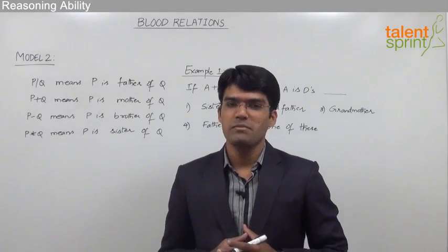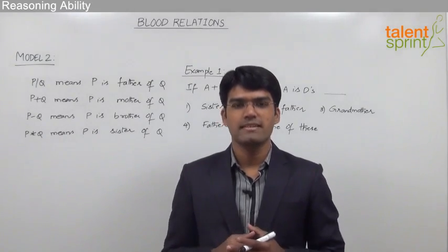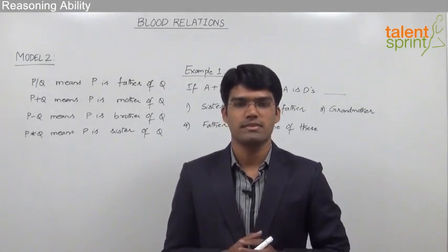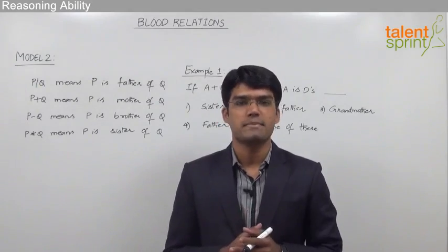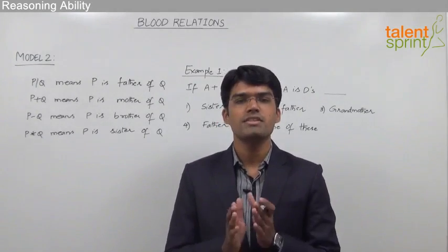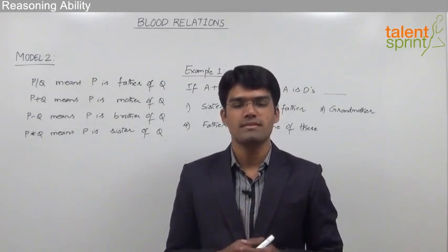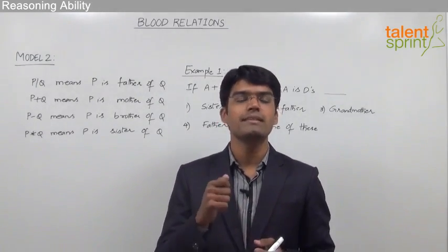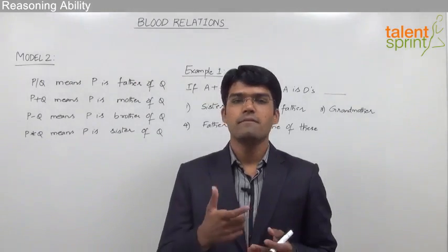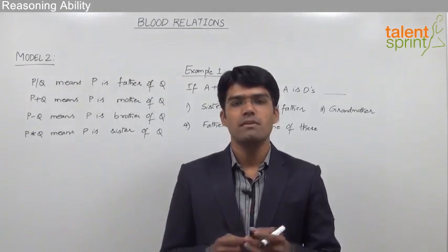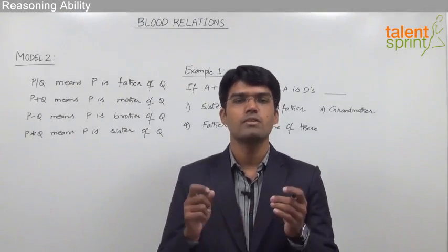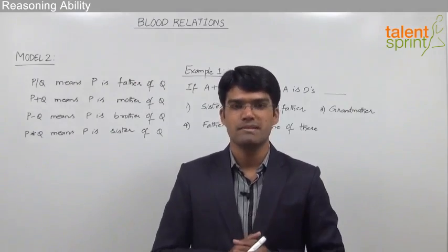Let us now discuss the second model from blood relations, which is generally a 3-mark question in bank exams. In this model, the relationship between two persons is given in terms of symbols, and then from the given equation, we need to find out the relationship between the two extreme persons.